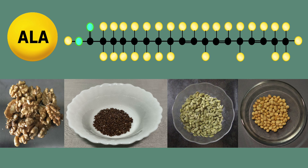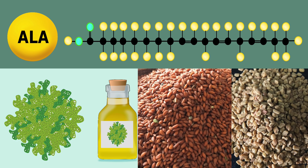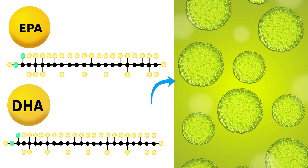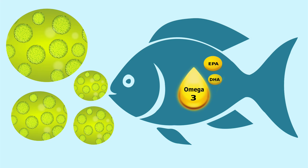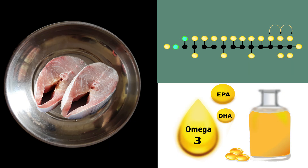ALA is present in walnuts, flax seeds, pumpkin seeds and soya. It is also present in algae oil, garden cress seeds and fenugreek seeds. DHA and EPA are synthesized by microalgae. When fish consume microalgae, they accumulate omega-3 in their tissues. Hence, fish and fish oils are good sources of EPA and DHA.